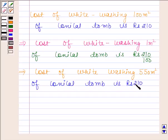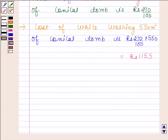Cost of whitewashing 550 square meters is Rs. (210/100) × 550, and this is equal to Rs. 1155. Hence our required answer is Rs. 1155. This completes the session, bye and take care.